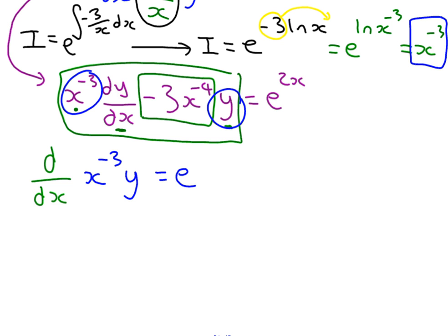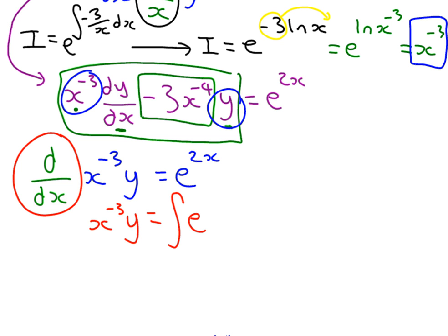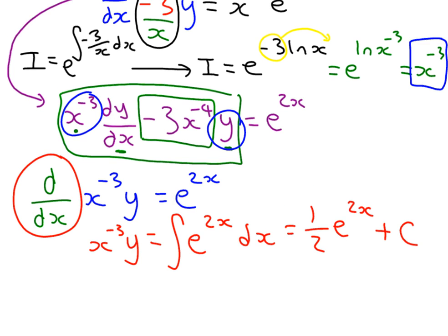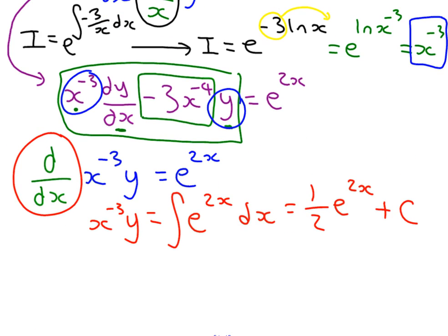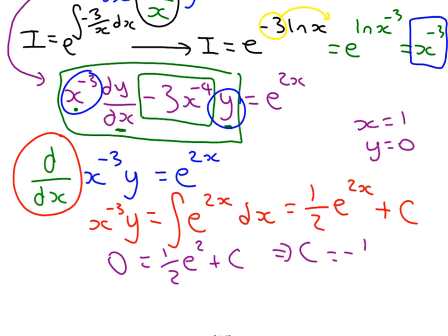This gives us e to the 2x on the right-hand side. Now we're trying to solve for y, so we undo the differential by integrating both sides. Integrating the left-hand side gives back x to the minus 3 times y, and the integral of the right-hand side is a half e to the 2x, plus c. We find our arbitrary constant using the boundary conditions x equals 1 when y equals 0. Substituting in: 0 equals one half e squared plus c, so c equals minus one half e squared.